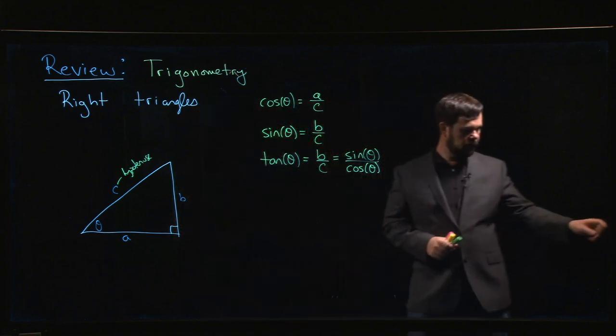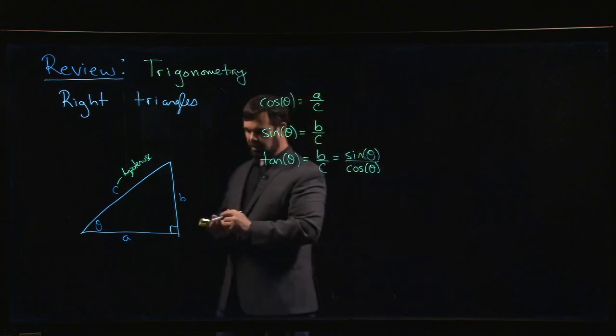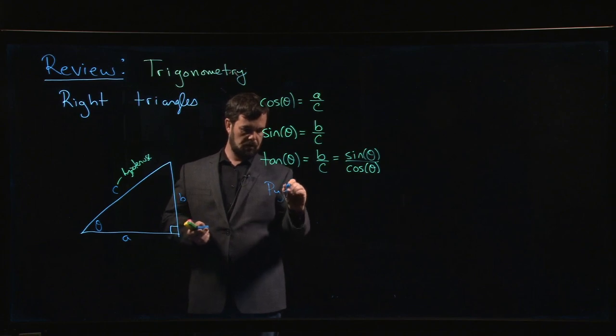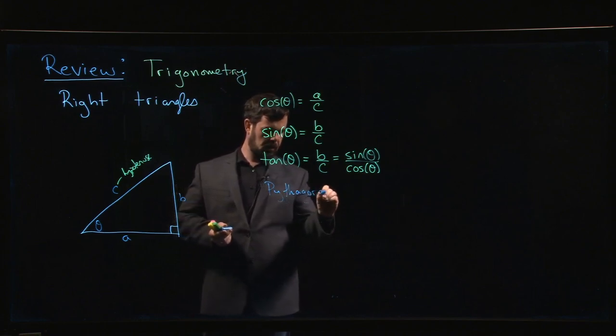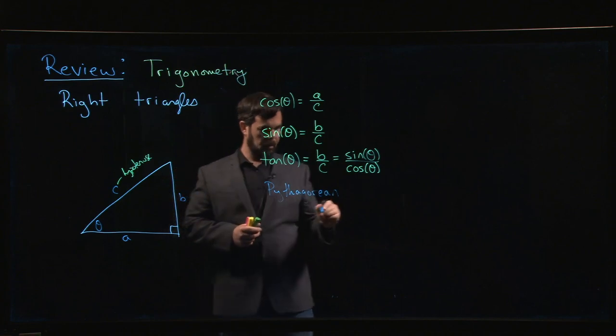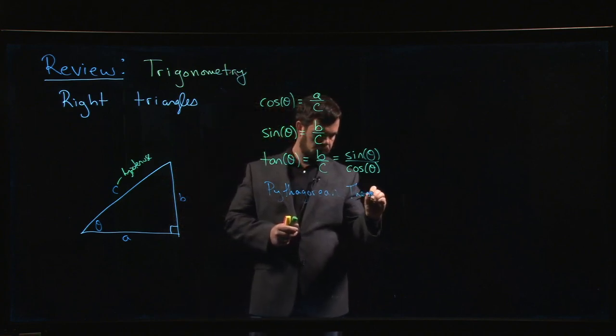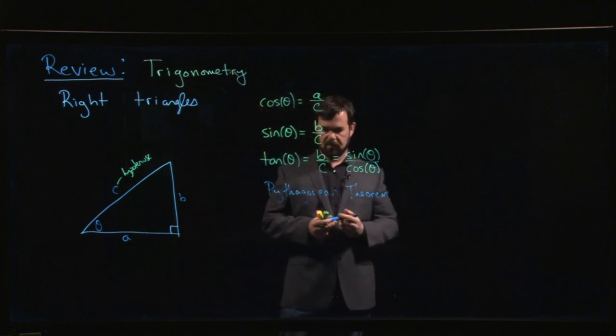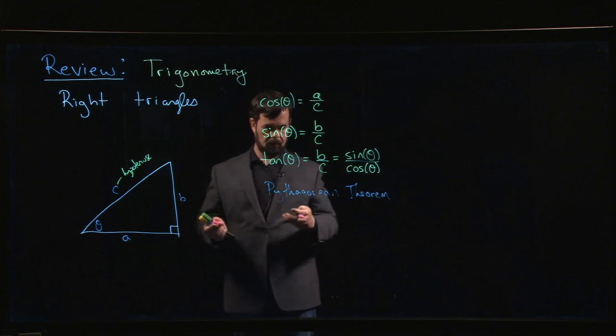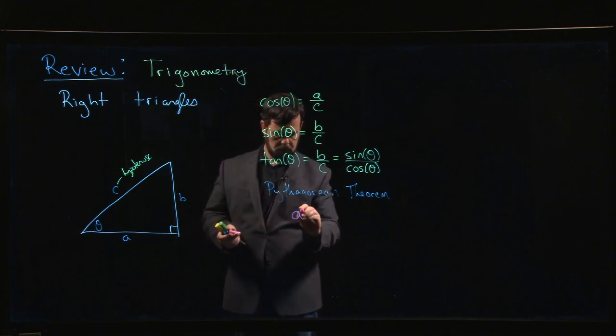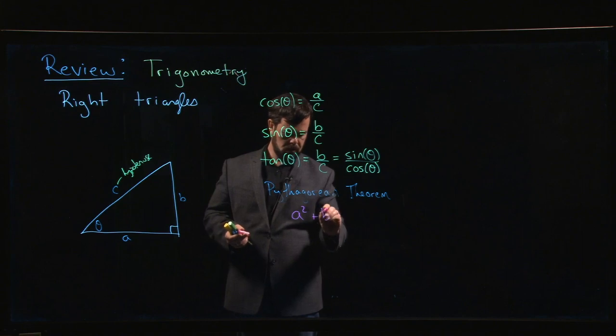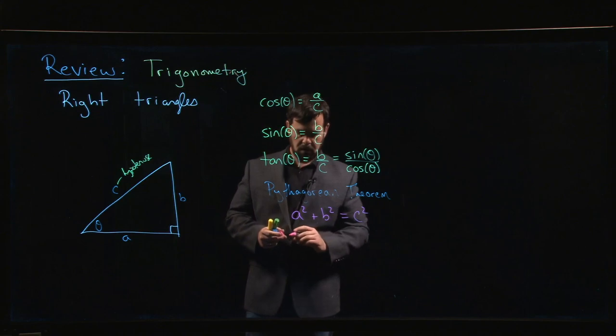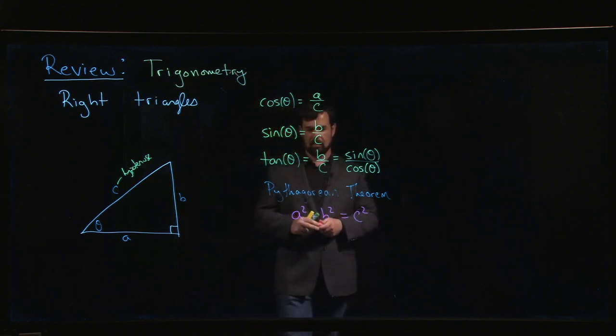But there's one other character that usually comes into the play, and that's Pythagoras. So we have the Pythagorean theorem, and the Pythagorean theorem is the statement that A squared plus B squared has to equal C squared. That's the Pythagorean theorem.